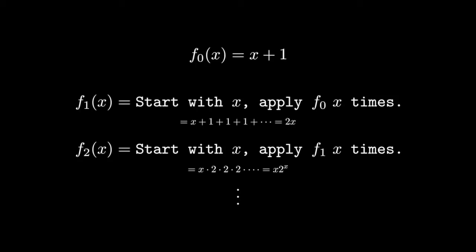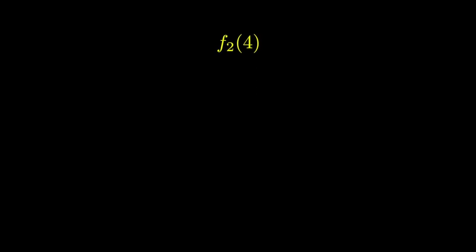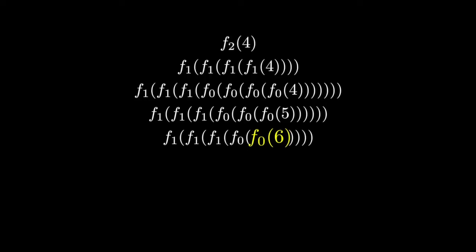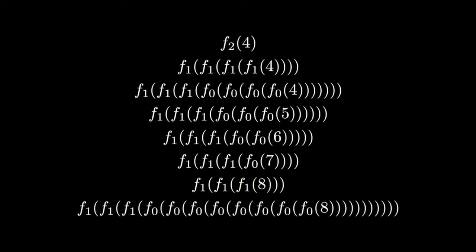Let's also take a look at what it's like to actually compute such a function. Take as an example f2 applied to the value 4. That's the same as applying f1 four times on 4. The innermost f1 applies f0 four times. Each application of f0 increases the value by 1, so the value increases till 8, and then applying f1 to it is the same as applying f0 eight times.